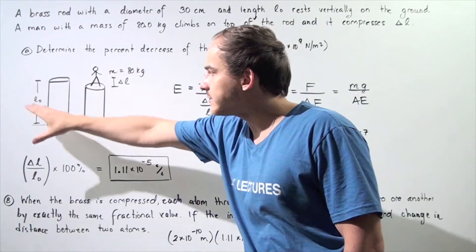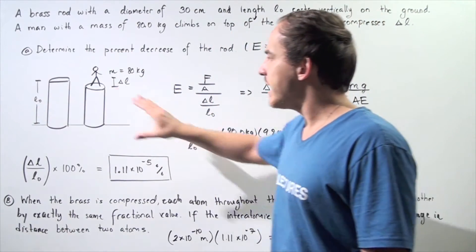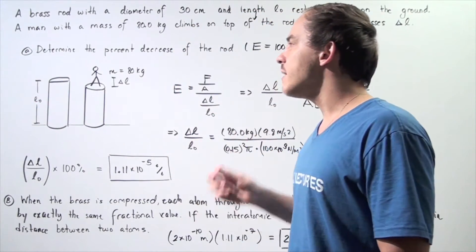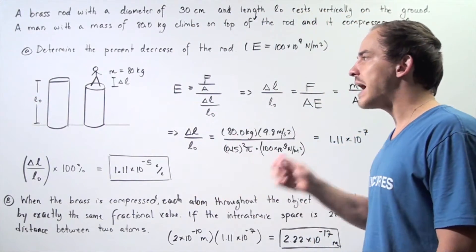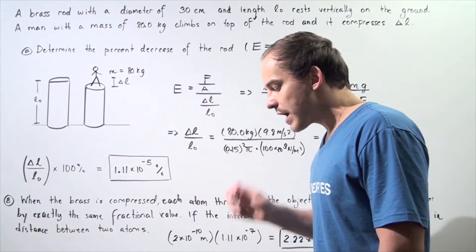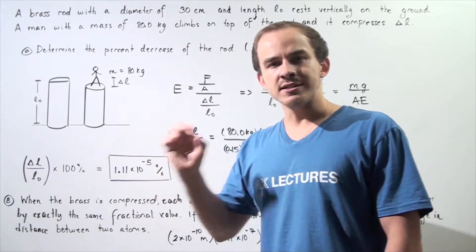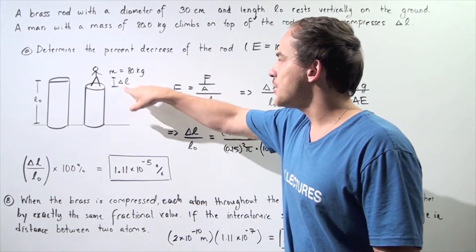So, let's begin with our diagram. In the diagram, we have our column. We have the rod. That is a height of L-naught. And then, a man climbs on top of that rod and the force of gravity acts on the man and in turn acts on the rod, compressing the rod a distance change in L.